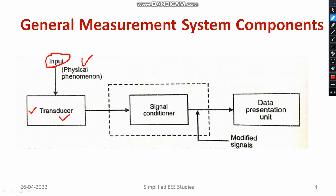The output of a transducer cannot be directly given to the data presentation unit because the amplitude will be very less — the strength of the signal is weak — and there are a lot of noises included with the signal. So we need to get rid of all these issues. Before connecting the transducer output to a data presentation unit such as a CRO, you need to use an interfacing device called the signal conditioning unit. It is mandatory for every type of measurement system.